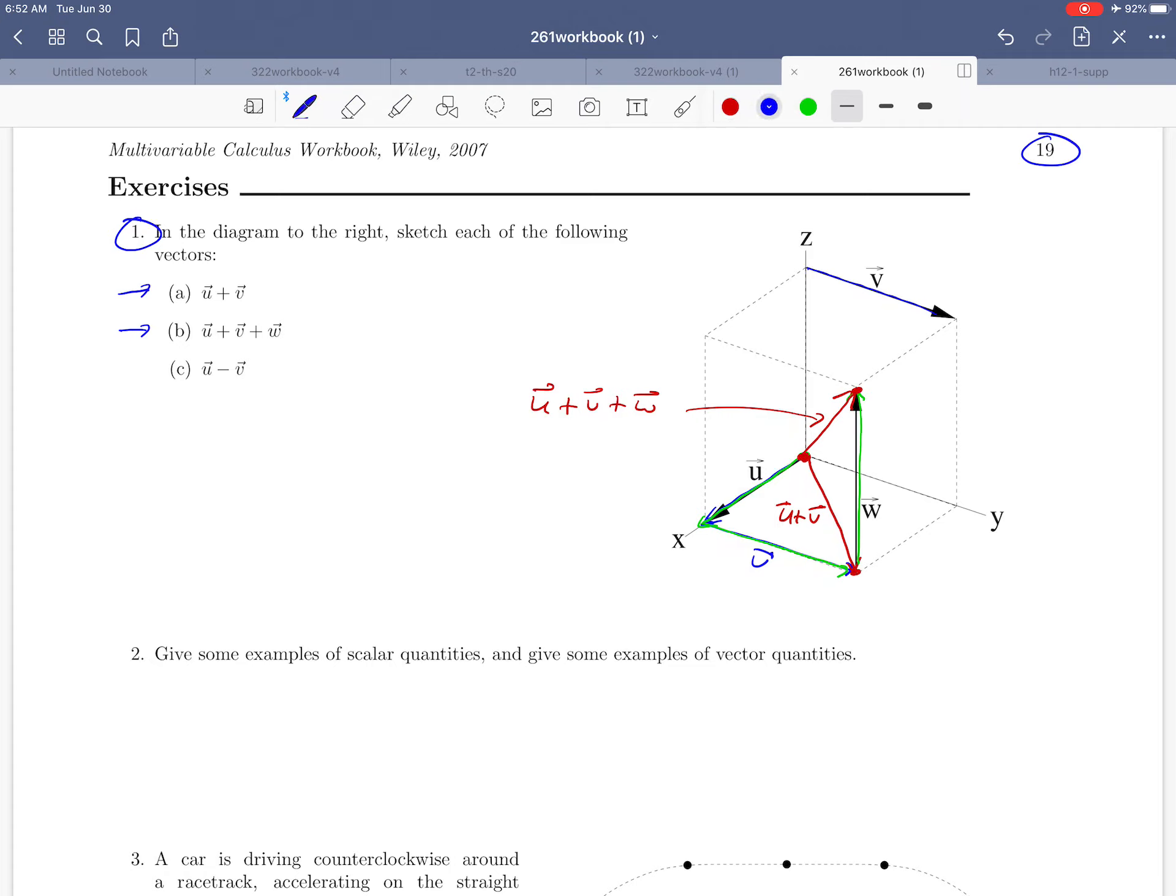All right and finally what about u minus v, where would that be in our diagram? Okay well again I'm going to take advantage of the fact that we're allowed to move vectors around. So we've got u down here that was the vector that was given to us, I'm gonna take that vector and move it here. And if you think about it, u minus v is the same as taking u and adding the vector negative v to it.